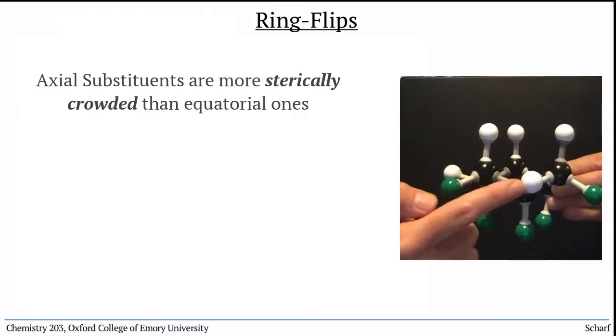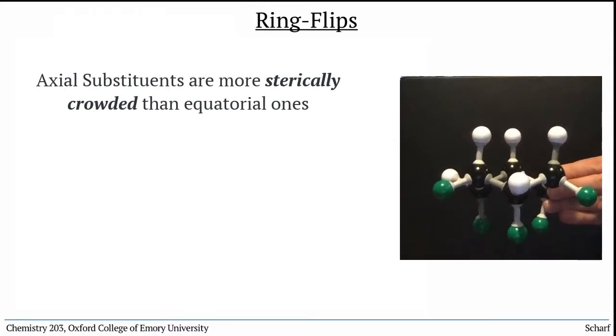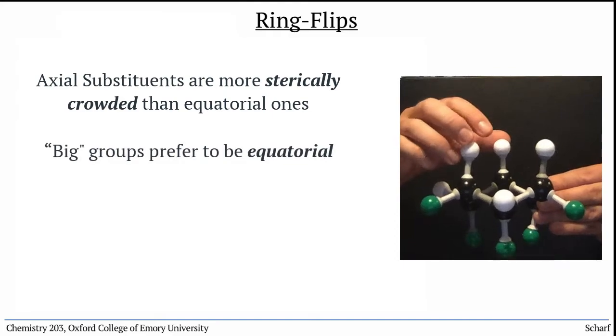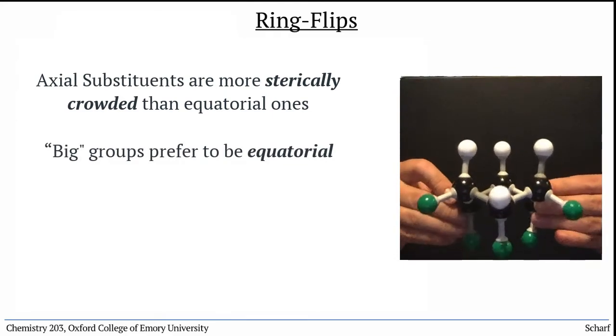This means that axial positions are more sterically crowded, and big groups therefore prefer to be equatorial.